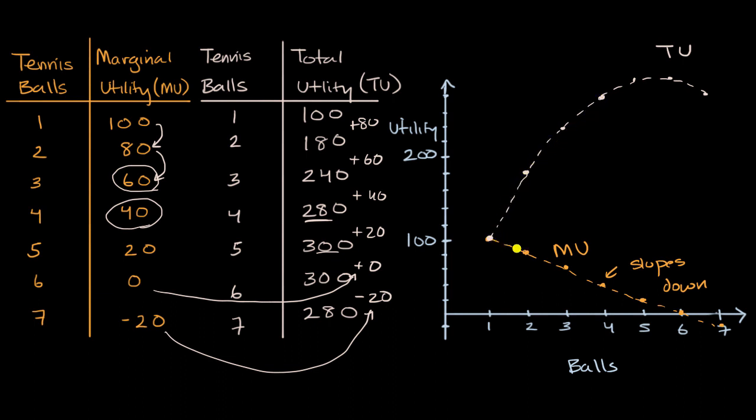But notice, because the marginal utilities are decreasing right over here, the rate of increase for total utility is decreasing. The slope here is decreasing. You can view the marginal utility as the slope of the total utility curve. And then notice, the total utility curve has a maximum value. It's starting to hit a maximum value right over there, when the marginal utility curve is hitting zero.